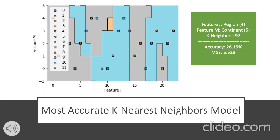Here is our most accurate k-nearest neighbors model. Feature J is on the X-axis and feature M is on the Y-axis. These correspond to the region in which the natural disaster occurred (feature J) and the continent in which the natural disaster occurred (feature M). Logically, these seem like the most sound features for prediction accuracy. For example, if you live in South America in a wet region, hurricanes are more likely. Using k equals 97 neighbors, accuracy improved from 24% to 26.15%, and the MSE reduced from 5.8 to 5.529 — an overall improvement.